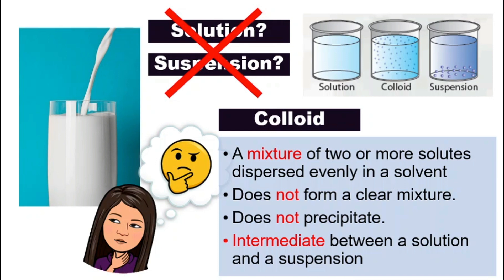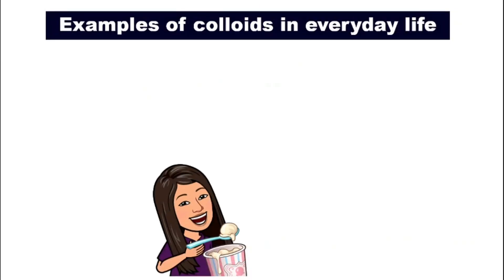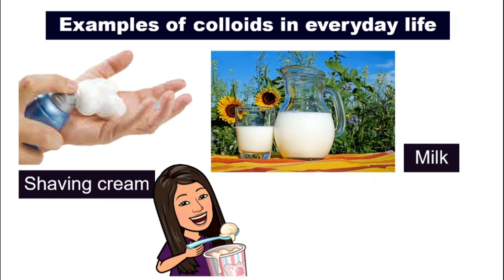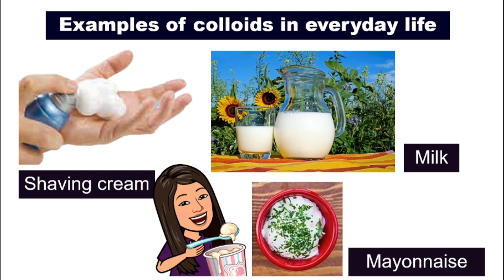So for solution, you don't see the solute — it dissolves in the solvent and forms a clear solution. For suspension, you can actually see the solute and they will settle if you leave it alone for a while. But colloid will not settle and it is also not clear. So it is in between solution and suspension. What are some other examples of colloid in our daily life? Well, milk is a form of colloid. Another example will be shaving cream and even whipping cream that you use on your dessert. Mayonnaise, yogurt, lotion — these are all examples of colloid.